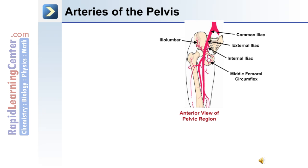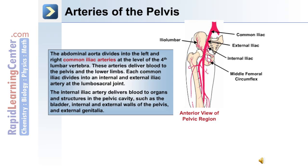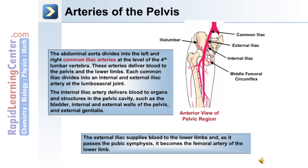Blood is brought into the pelvic region through the common iliac artery, which divides into an internal and external iliac. The abdominal aorta divides into the left and right common iliac arteries at the level of the fourth lumbar vertebra. Each common iliac divides into an internal and external iliac at the lumbosacral joint. The internal iliac delivers blood to the organs and structures in the pelvic cavity, such as the bladder, internal and external walls of the pelvis, and the external genitalia. The external iliac artery supplies blood to the lower limbs and, as it passes the pubic symphysis, it becomes the femoral artery of the lower limb.